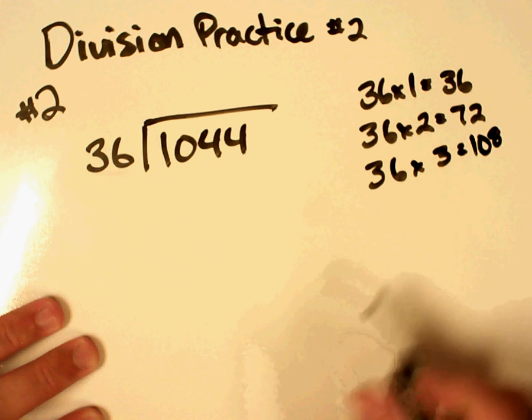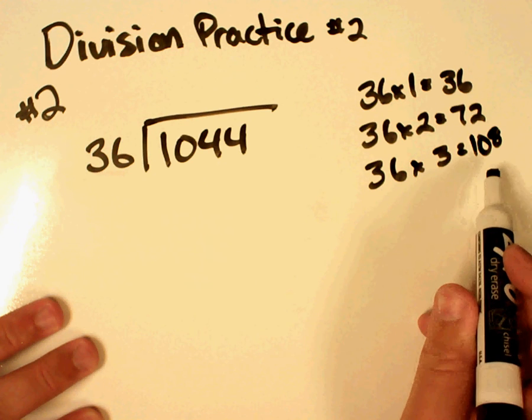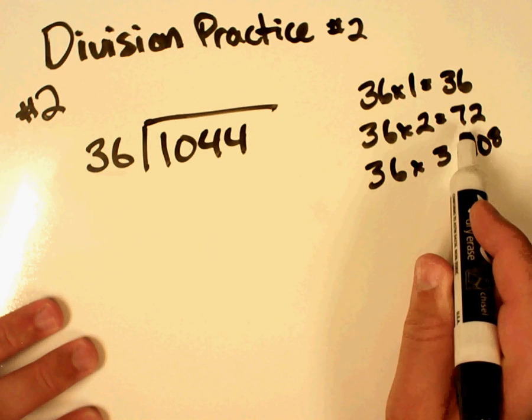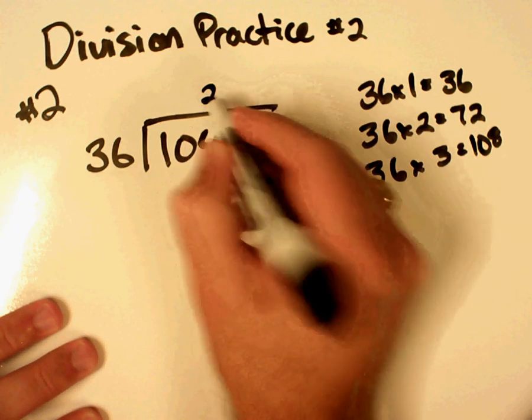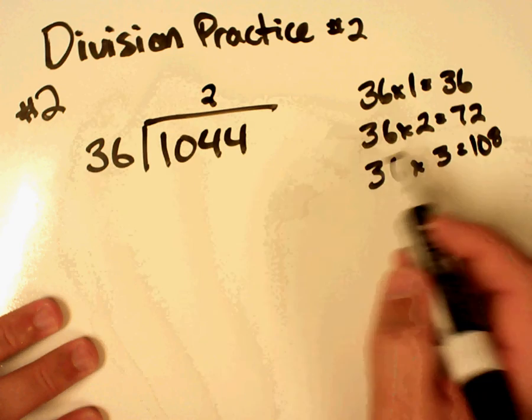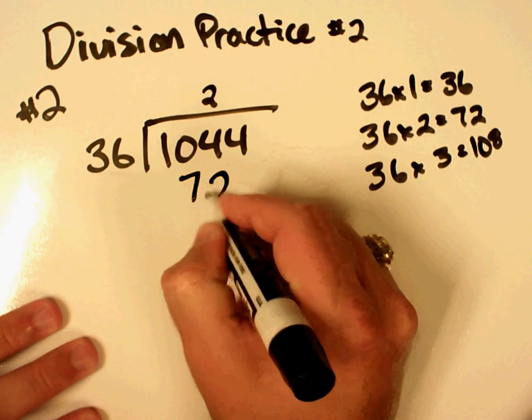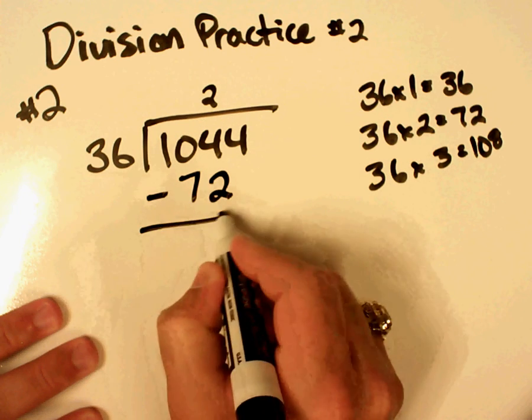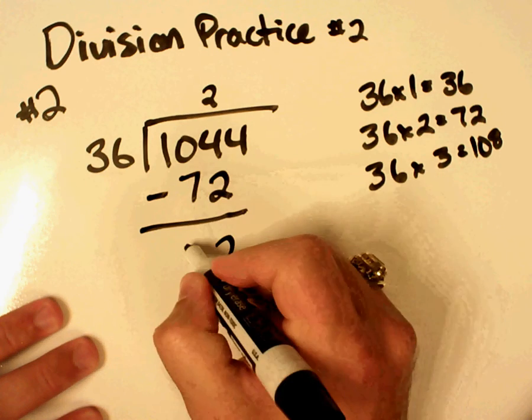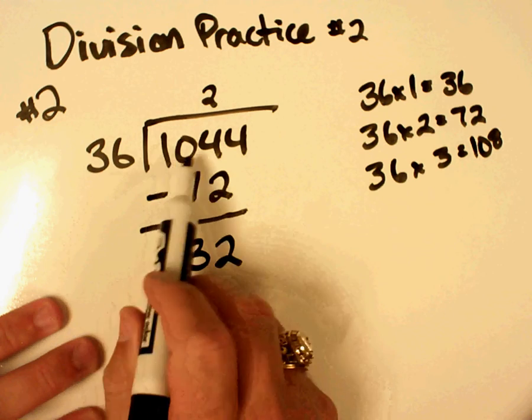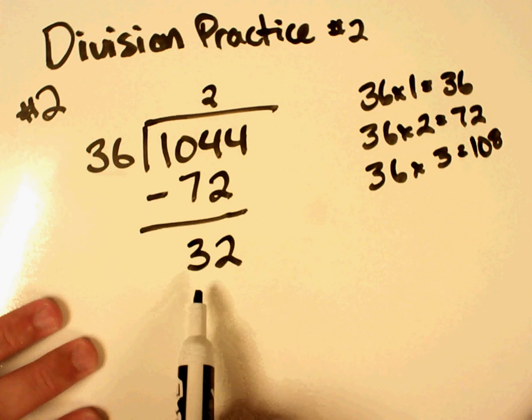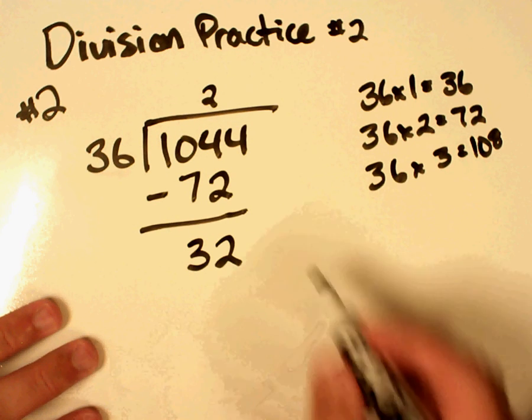Now, 36 times 3 gives me 108. Well, that's too much. So, I'm going to have to go with 36 times 2 gives me 72. So, I'm going to have to go with the 2, because 108 is too much. So, that's going to be 36 times 2. Since I've already done the work over here, I already know that that's 72. I'm going to subtract. 4 minus 2 is 2. 10 minus 7 is 3. Now, I could have gone ahead and borrowed from this 1 and put a 1 here, but, really, this is 10 minus 7. So, I can just put my 3 down there. Then, I pull my 4 down.